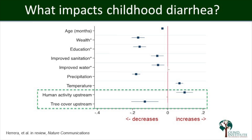Here are the results. Each blue square is the effect of each variable on the probability of a child getting diarrhea. If it's to the right of the red line, that variable increases diarrhea risk as it increases; to the left, it decreases risk. Getting older helps, being wealthier helps, more education helps — those are the confounding mitigating factors. But look at the bottom two — that's the natural capital. Human activity upstream increases the probability of diarrhea, while tree cover upstream reduces it. This is a signal across all these countries, kids, and cultures that how you treat your watershed has real and measurable impacts on human health.